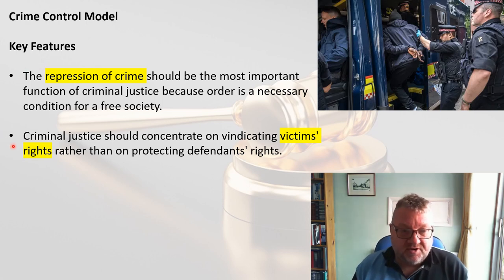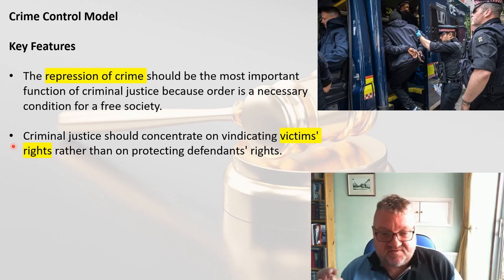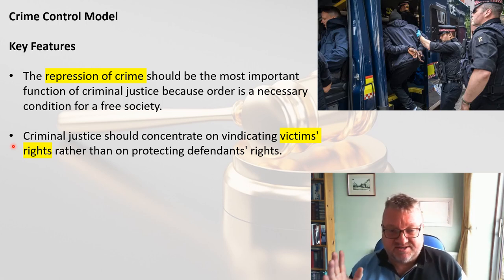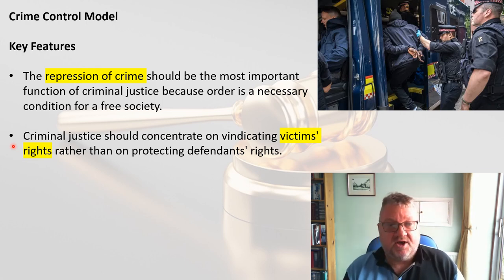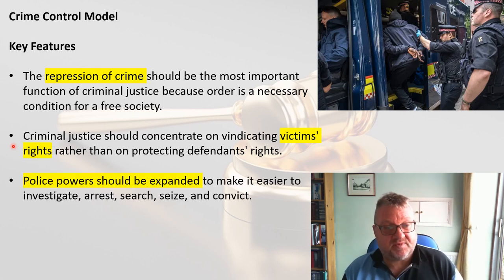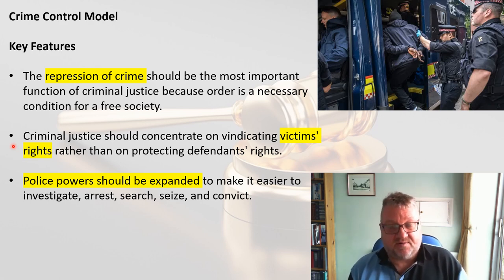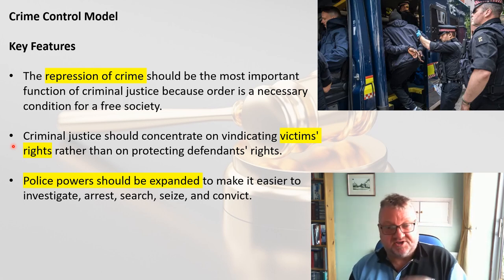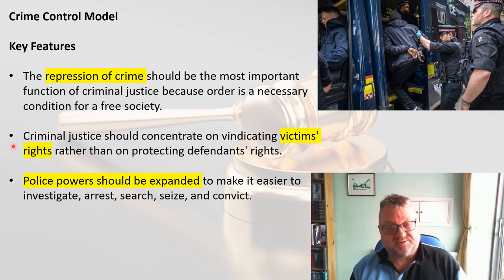The crime control model focuses on victims' rights. It's the rights of the victim — innocent people who have had crimes inflicted upon them — who should take priority within the criminal justice system, not the people who've deviated from the norm and chosen to commit crime. In order to repress crime and vindicate victims' rights, the police need the powers to do their job. So under the crime control model, police powers are expanded; it's easier for the police to investigate, arrest, search, seize, and convict.